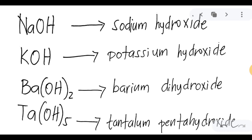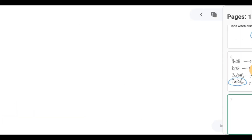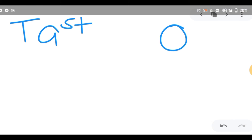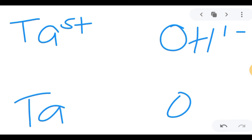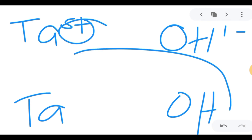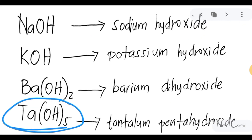How did we obtain the chemical formula of tantalum pentahydroxide? Tantalum has a positive charge of 5 and hydroxide is negative 1. By exchanging charges, 5 becomes the subscript of hydroxide, requiring parentheses since it is more than 1, giving Ta(OH)₅ — tantalum pentahydroxide.